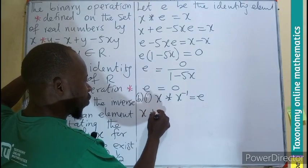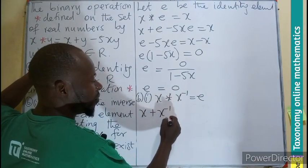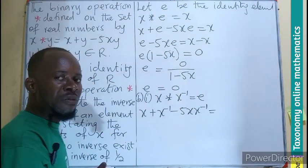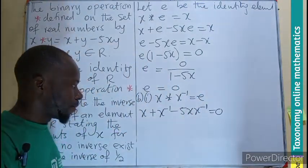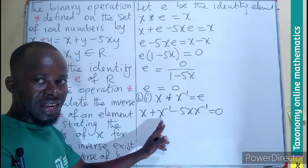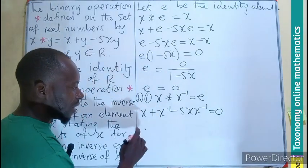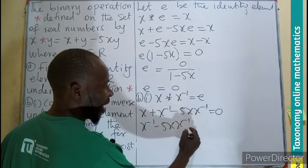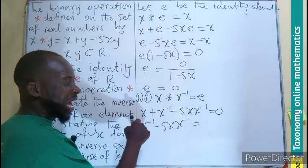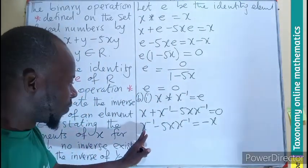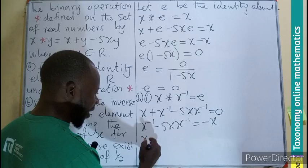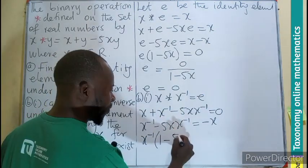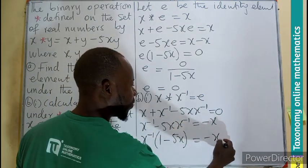We say that x is the first one plus the second term, the inverse, minus 5x times x inverse, giving us the identity, which we found to be 0. So that will be 0 there. We are looking for this inverse, so all other terms go away. Meaning I have x inverse minus 5x times x inverse equals negative x.